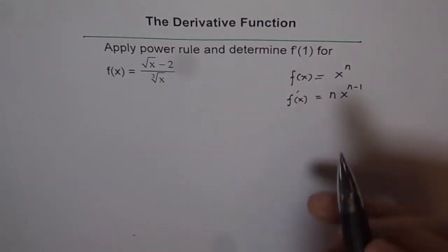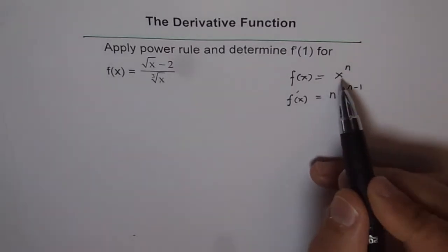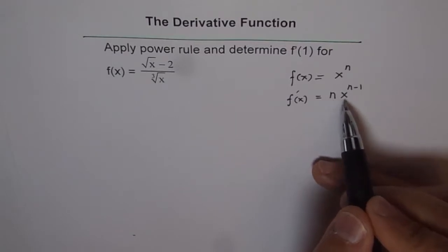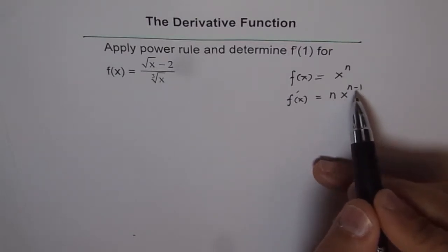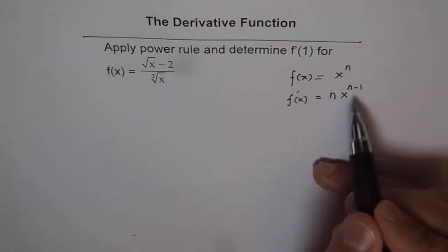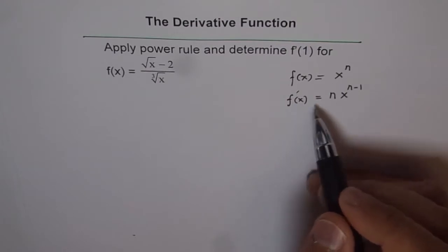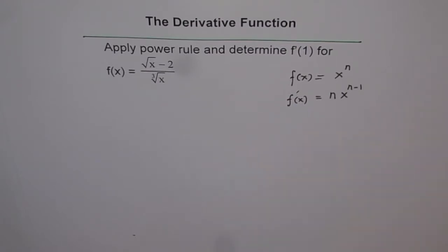The exponent n becomes the coefficient and the exponent decreases by 1. The derivative is normally one degree lower — that is what we see from the power rule.